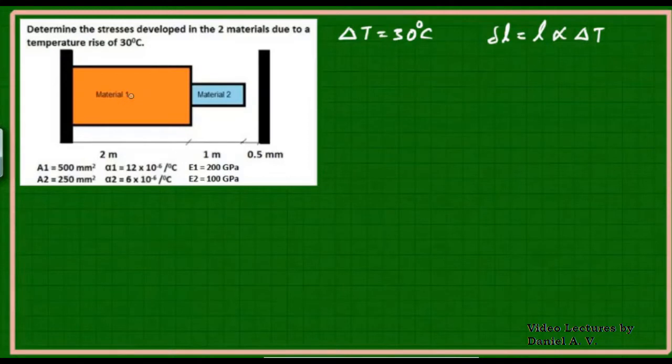When we consider temperature change, the change in length for material 1 due to this temperature change can be calculated as ΔL₁ = 2000 × 12 × 10⁻⁶ × 30. I am calling this L₁·α₁·ΔT.